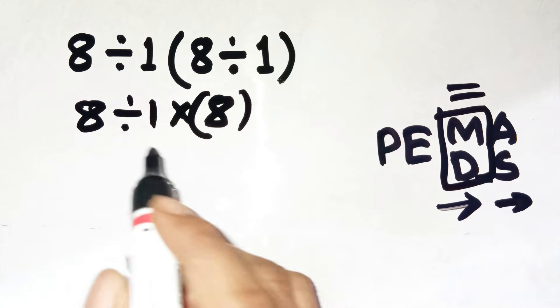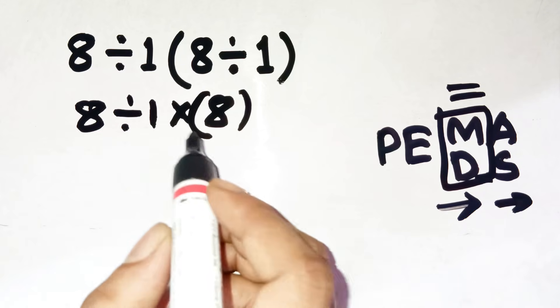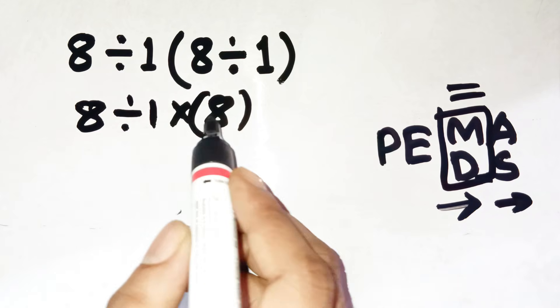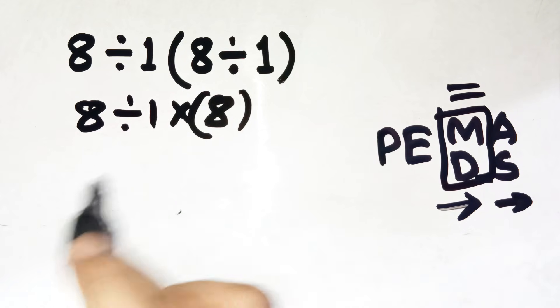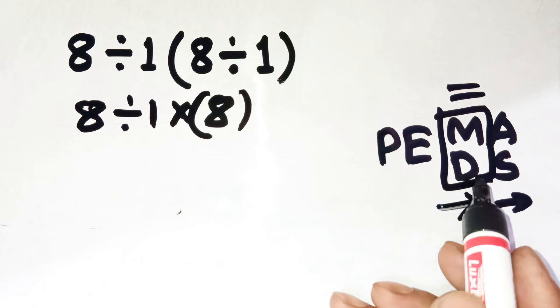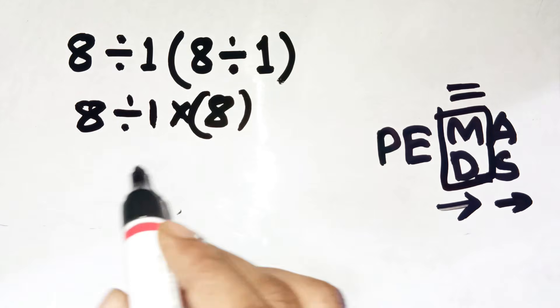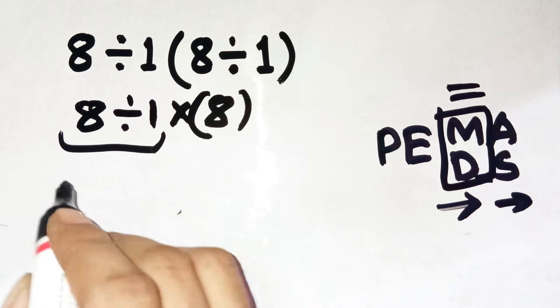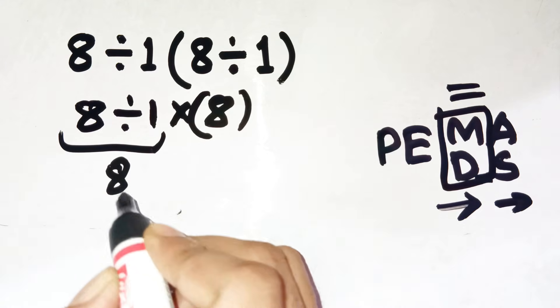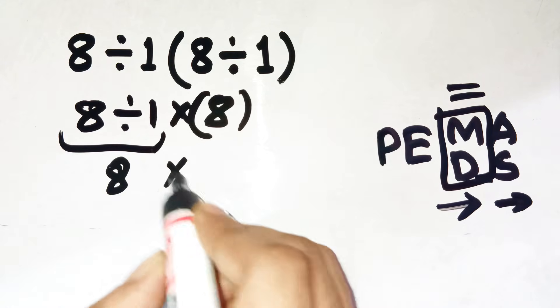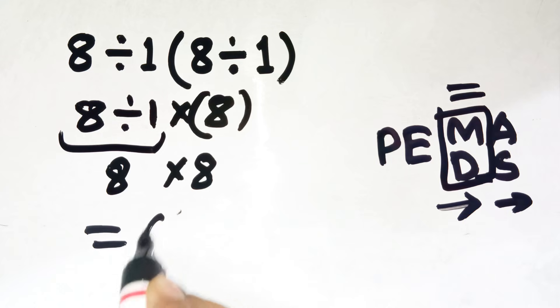Now here's the twist. You do not multiply 1 times 8 first. Division comes first simply because it appears first from the left. So we go 8 divided by 1 equals 8. Now we have 8 times 8, and that is 64.